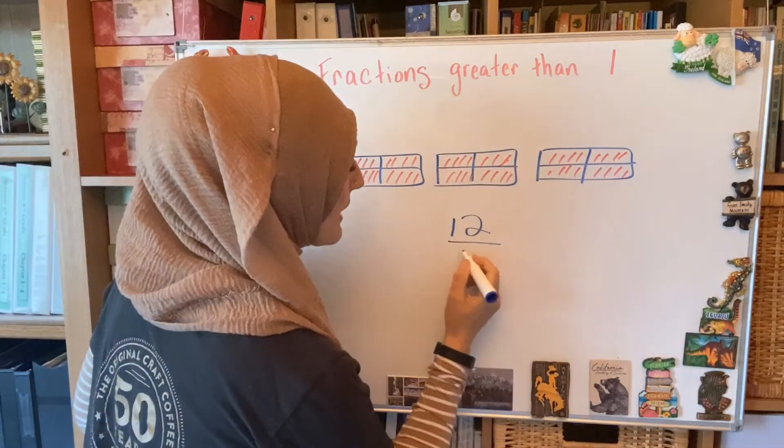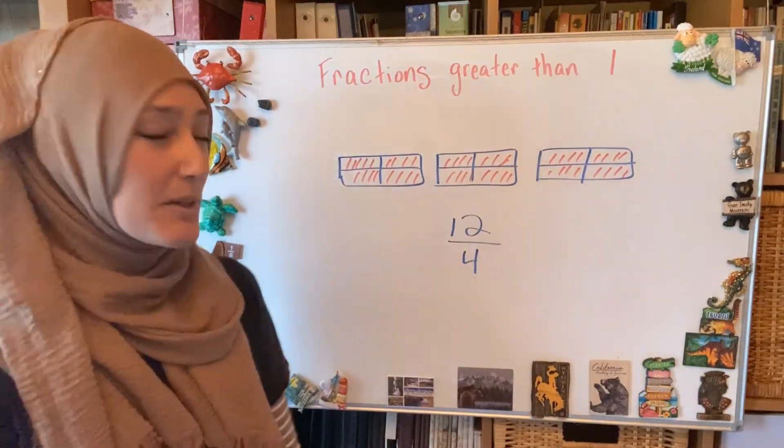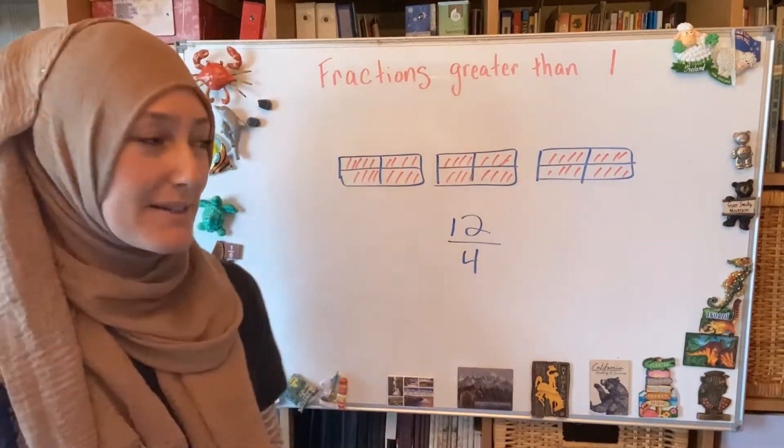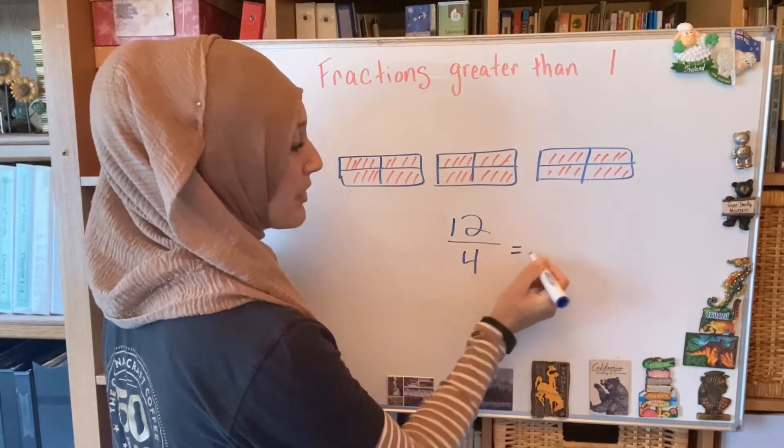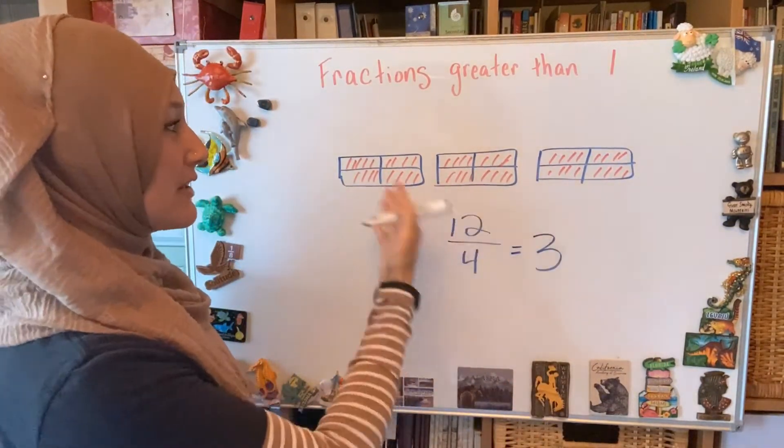So I would write this as 12 fourths. And then you should also see pretty quickly that if you want to turn it into a whole number or a mixed number, it's basically division. And what do you get if you have 12 fourths? You get three wholes, and that's what you see here, three wholes.